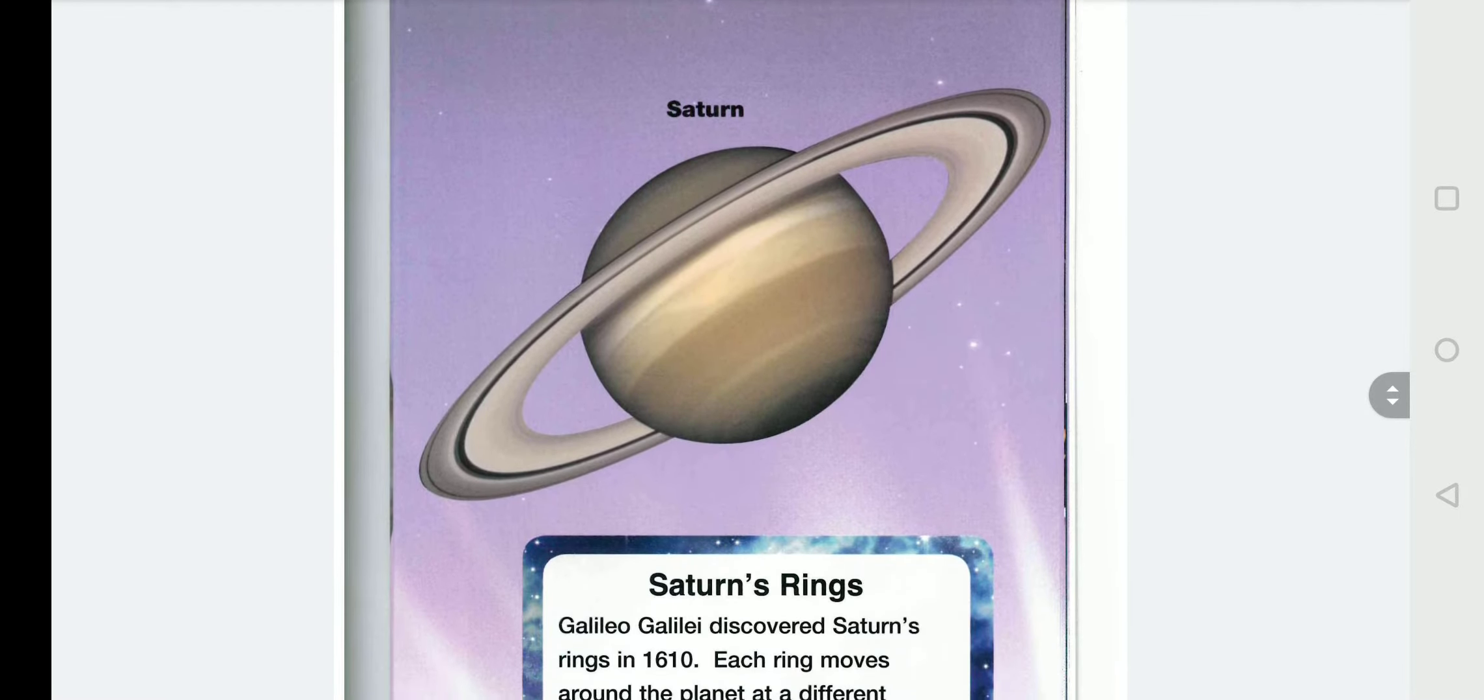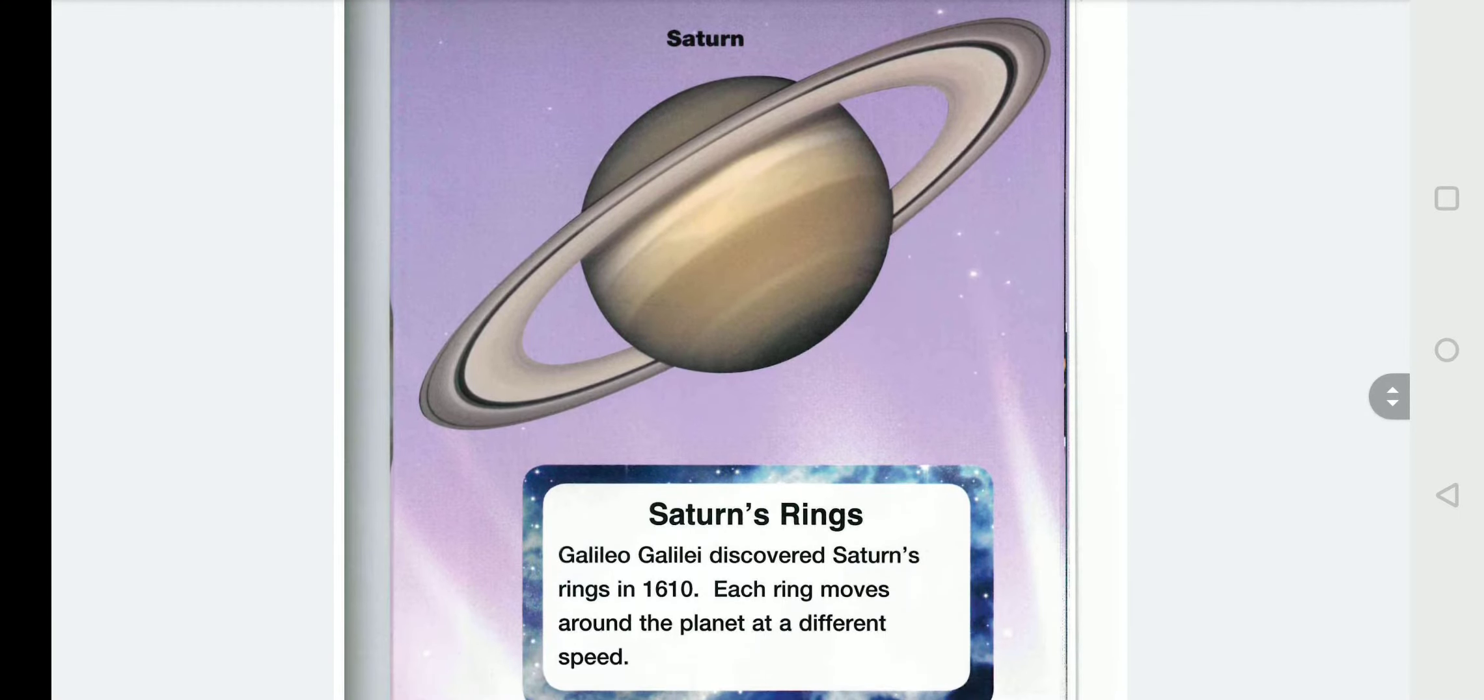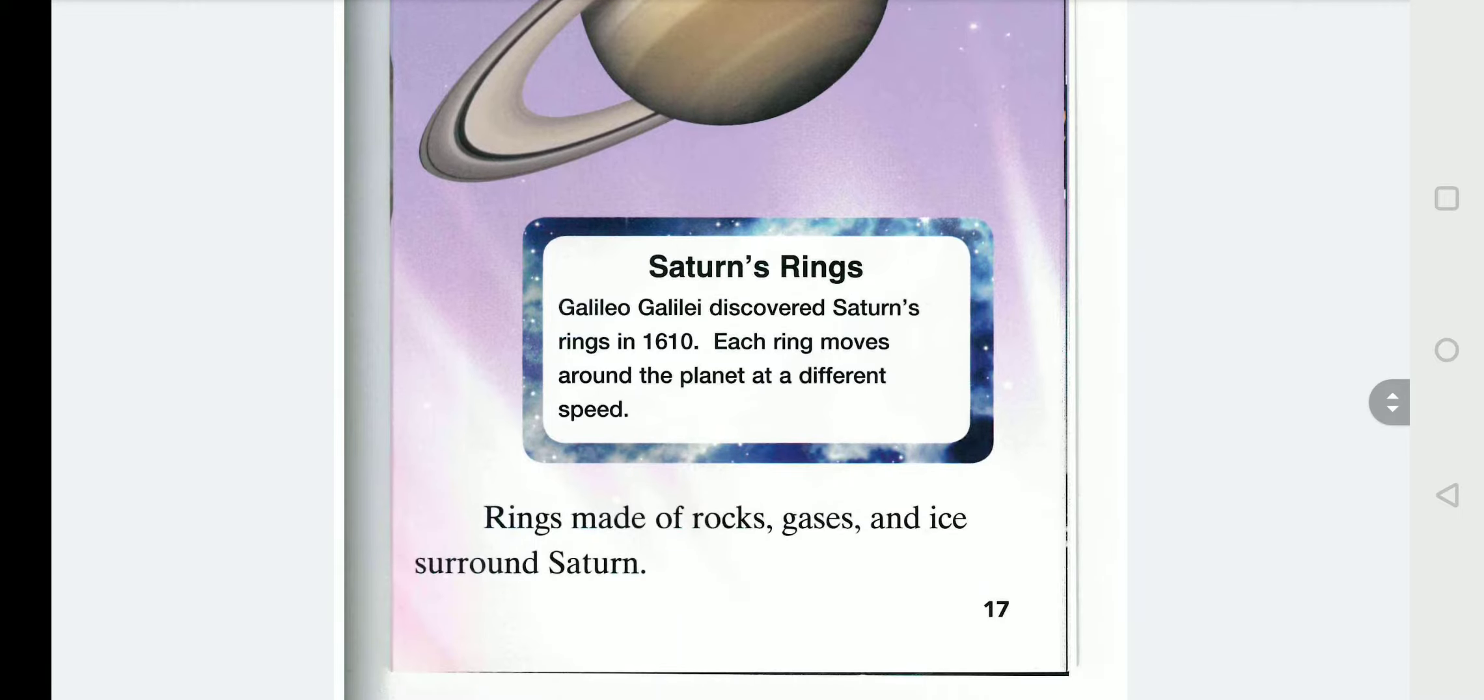Saturn. Saturn's rings. Galileo Galilei discovered Saturn's rings in 1610. Each ring moves around the planet at a different speed. Rings made of rocks, gases and ice surround Saturn.